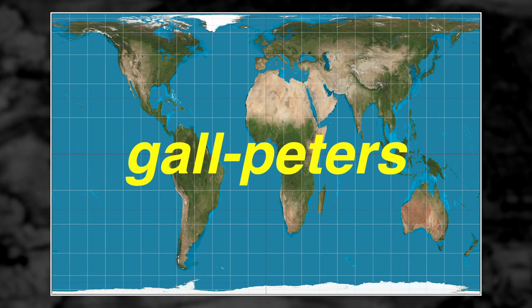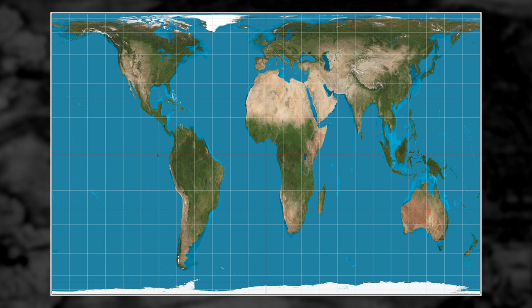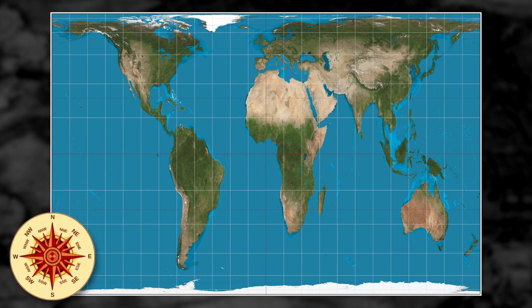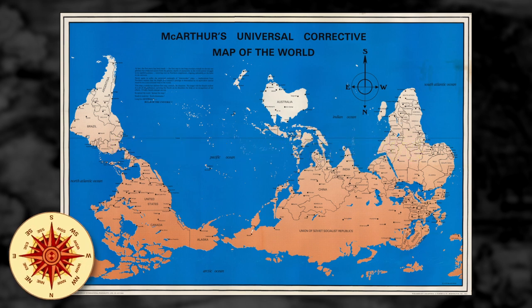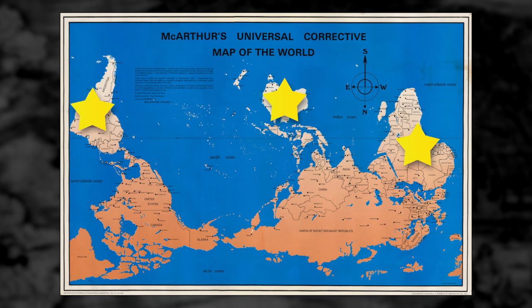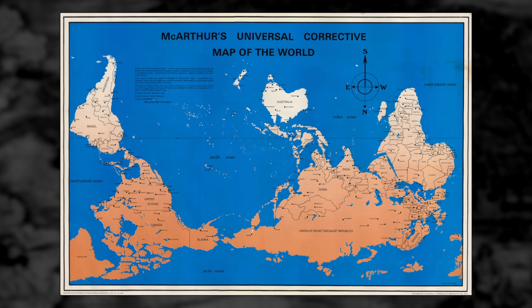The Gall-Peters projection depicts a more accurate representation of landmass size and location. But even then, there's no reason why maps should be oriented with north at the top. In Stuart MacArthur's Universal Corrective Map of the World, he orients the map with south at the top. Australia, Africa, and South America immediately stand out and appear more dominant in this projection. But again, consider the map maker's bias — Australia is near-centered in the map, above every other landmass, in the coveted location of dominance. A simple change in orientation can completely change the map maker's message to the audience.